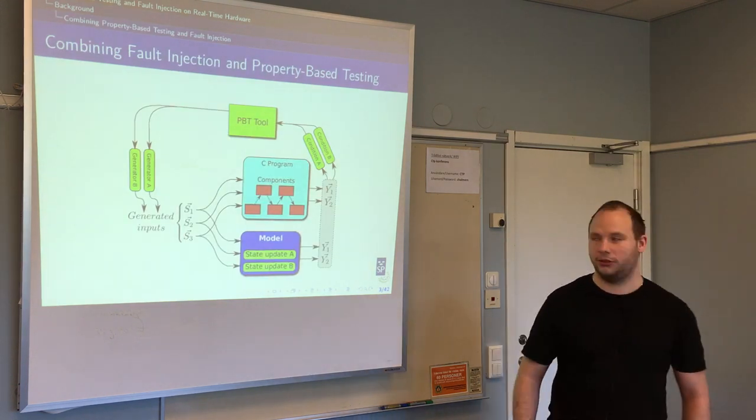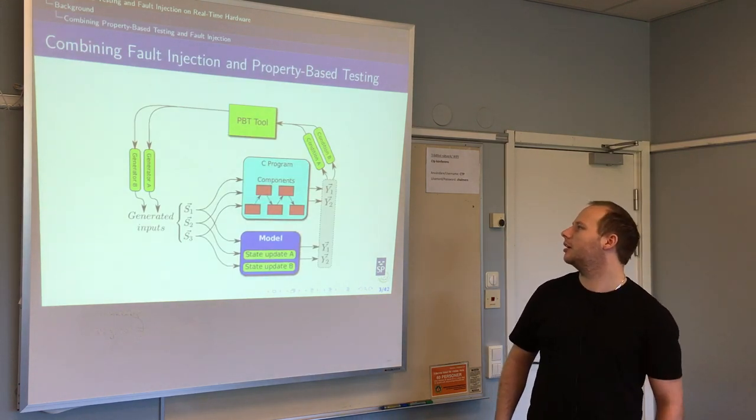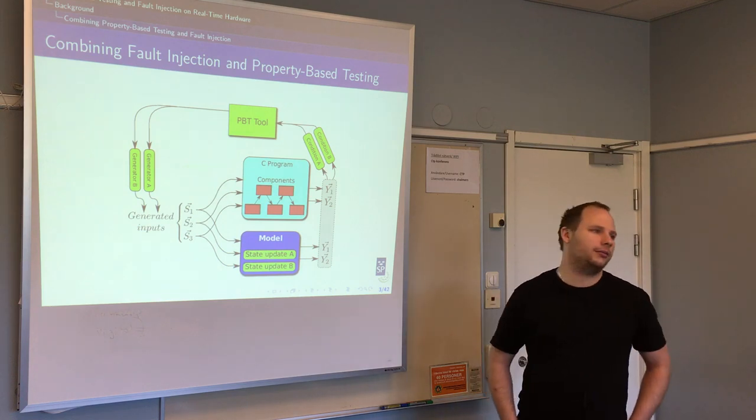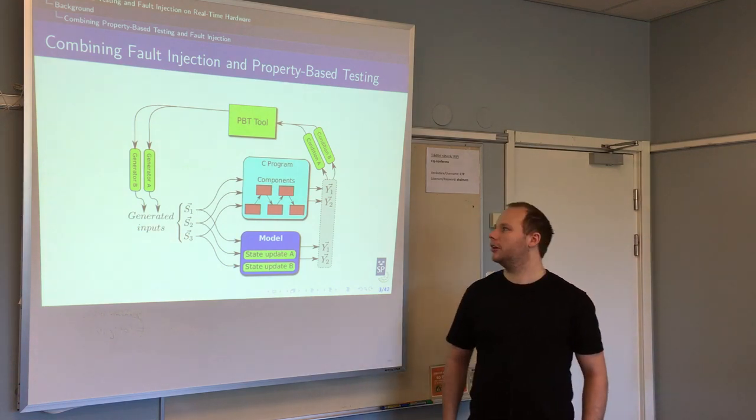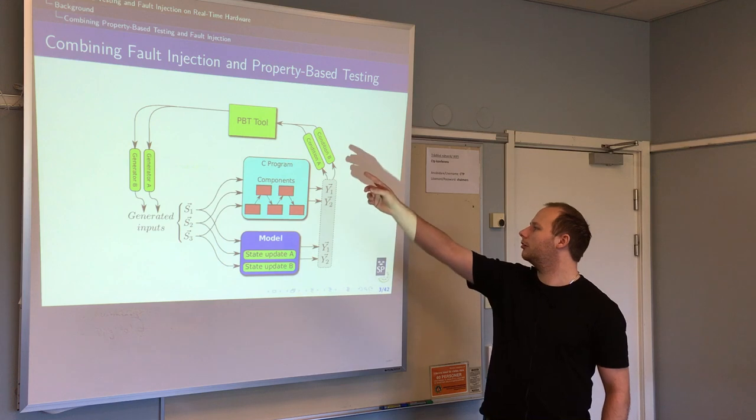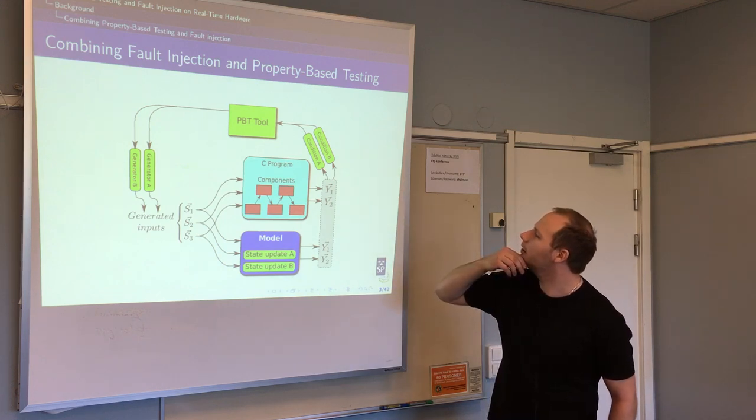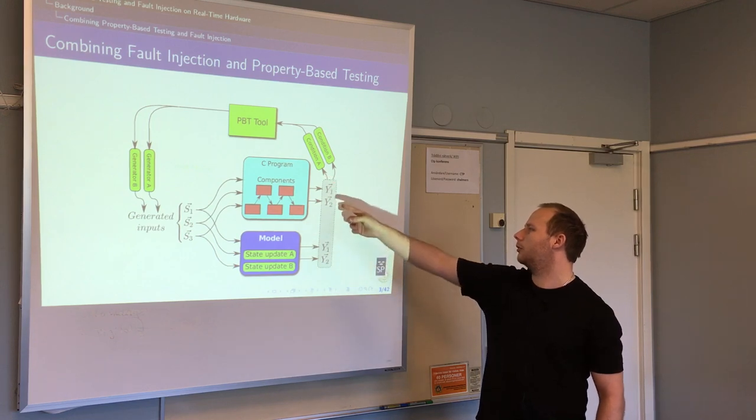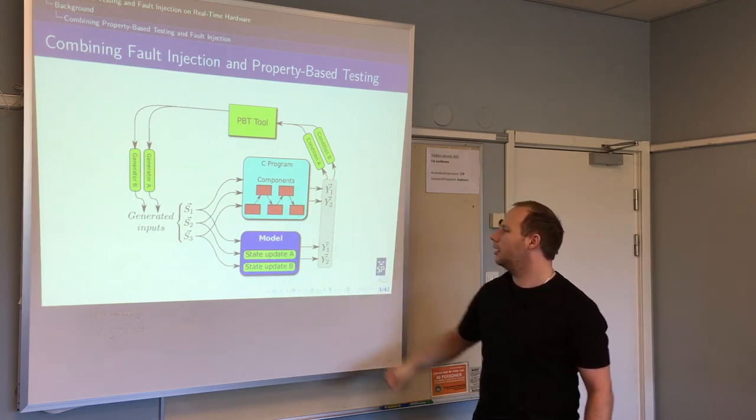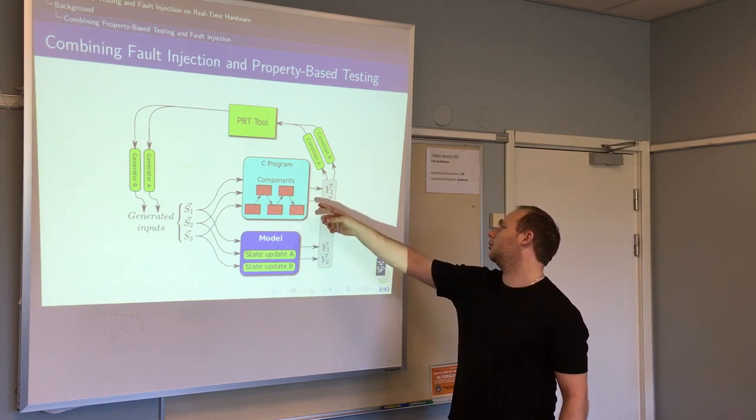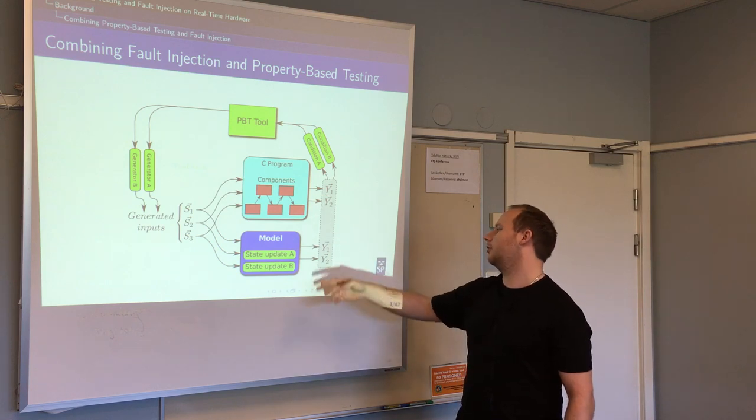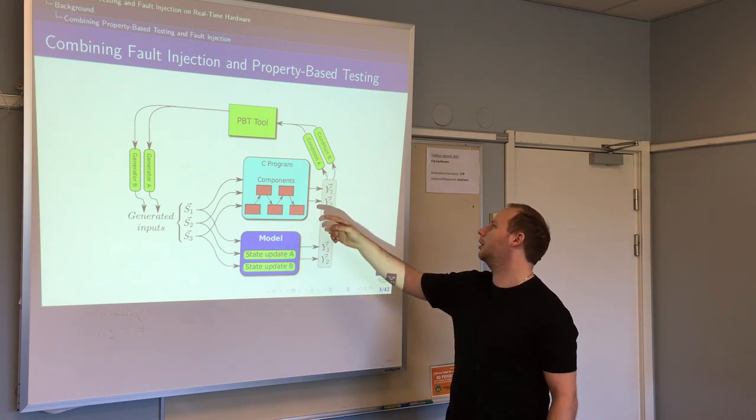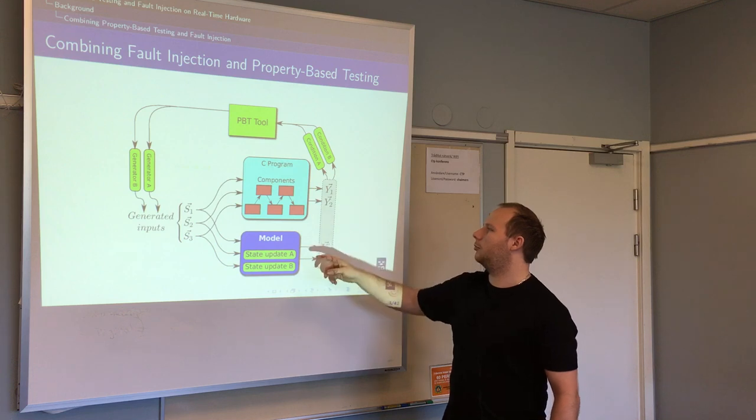This is a picture I drew a long time ago about the state machine-based testing of QuickCheck. You have a tool that generates some data, and you have a C program in that case, and have some kind of model. You get some output, and you generate something from the model based on this input, and then update the condition and update the state.